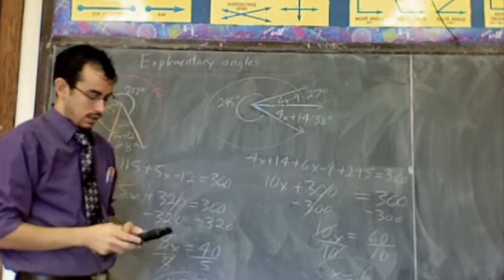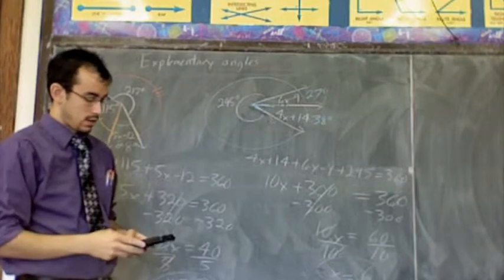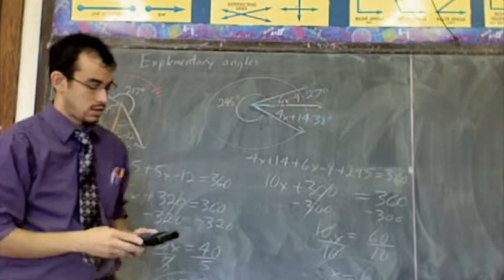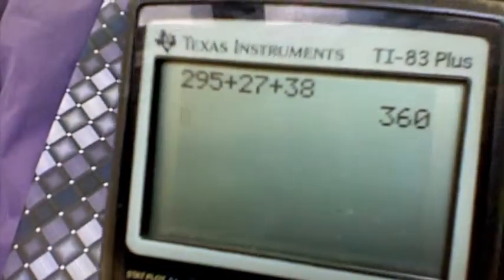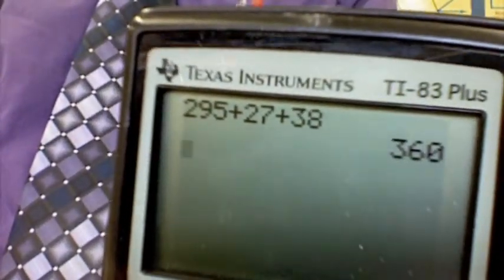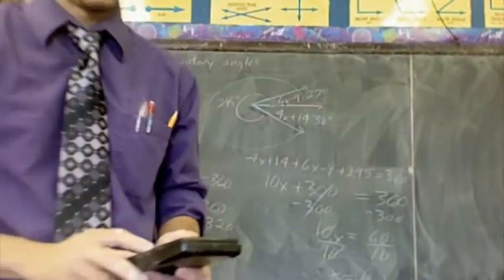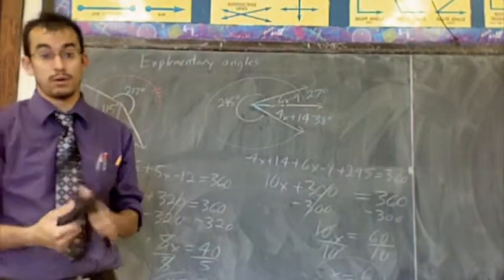And hopefully I will get my desired 360. 27 plus 38. And if you look at my calculator right here, you'll see that I wasn't lying. 295 plus 27 plus 38 is indeed 360.